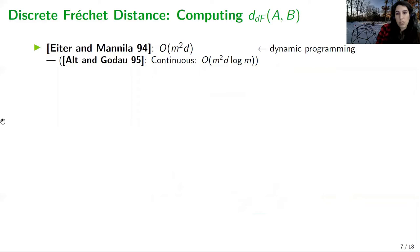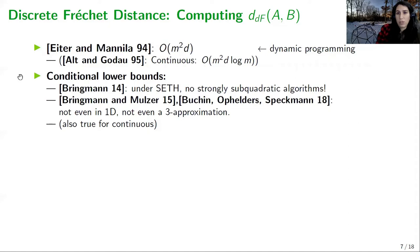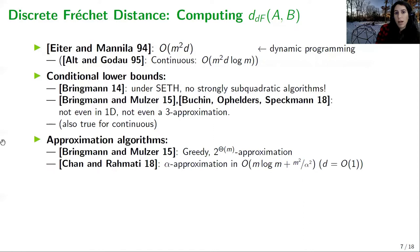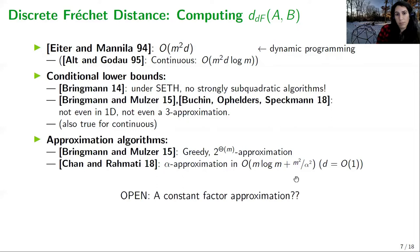To compute the discrete Fréchet distance between two curves there is a quadratic time dynamic programming algorithm, and this is also true for the continuous case. This was known already in 1994, and only 20 years later in 2014 it was shown that under the strong exponential time hypothesis you cannot get subquadratic time, and not even a 3-approximation in subquadratic time. There are some approximation algorithms, and the best known achieves an alpha approximation in O(m log m + m² / alpha²) time, meaning you can get a linear approximation in linear time, but a constant approximation in subquadratic time remains unknown.